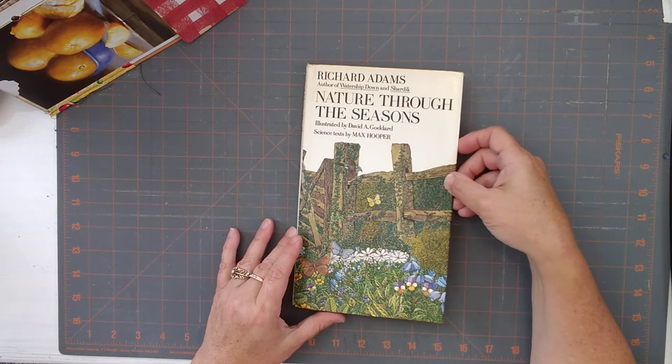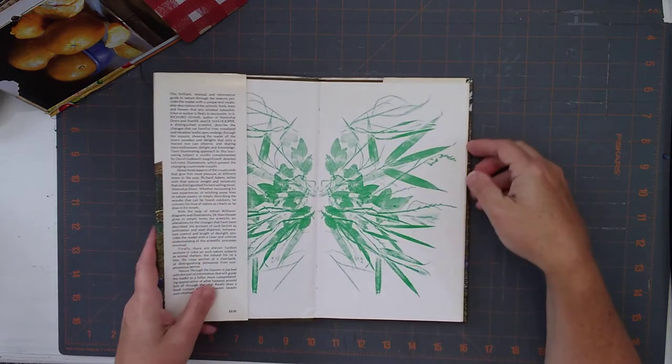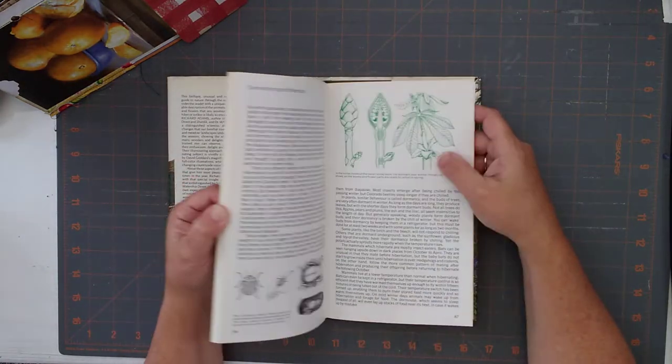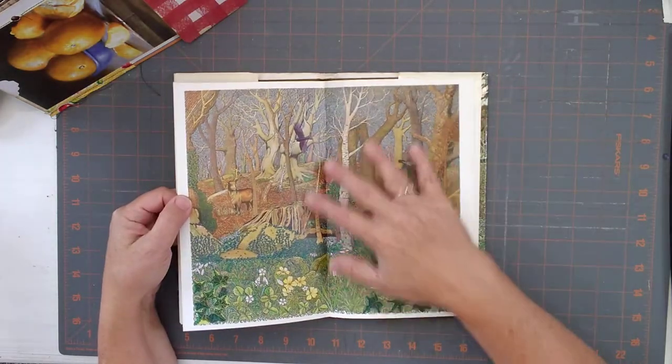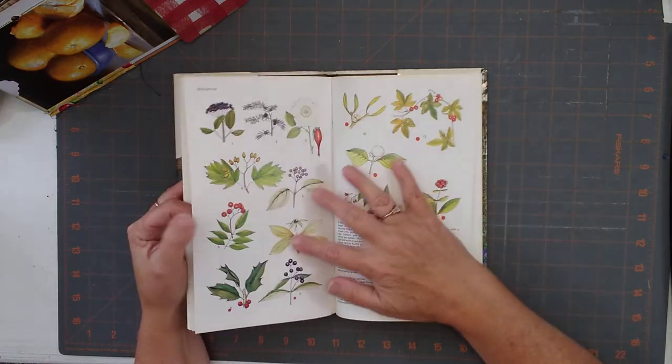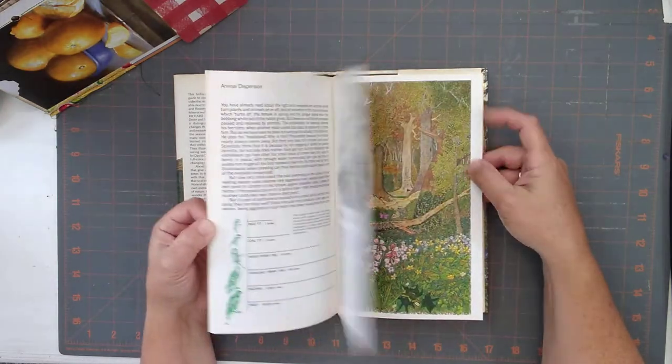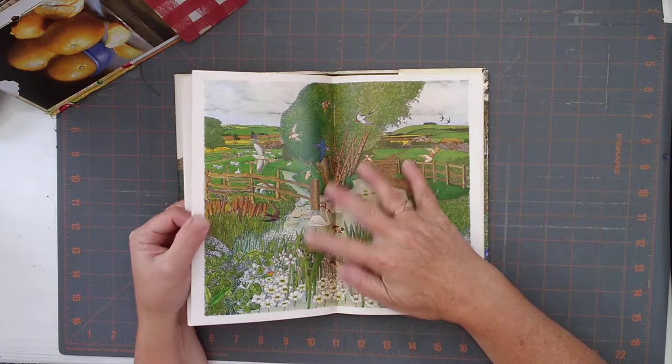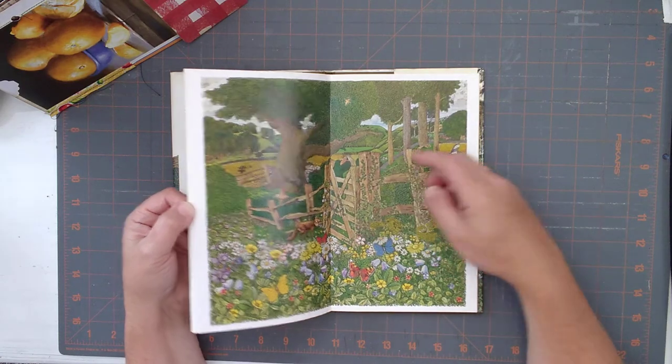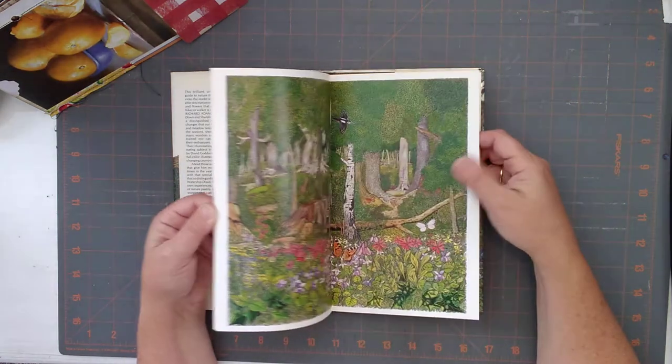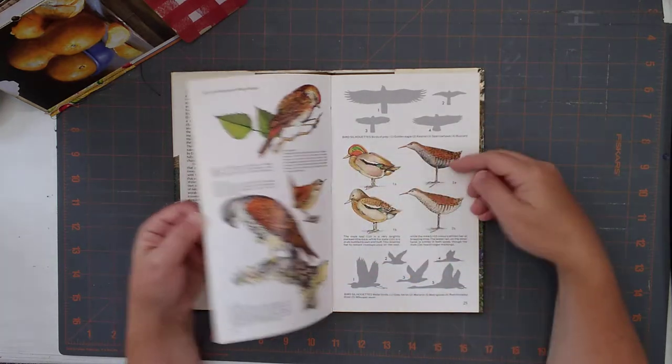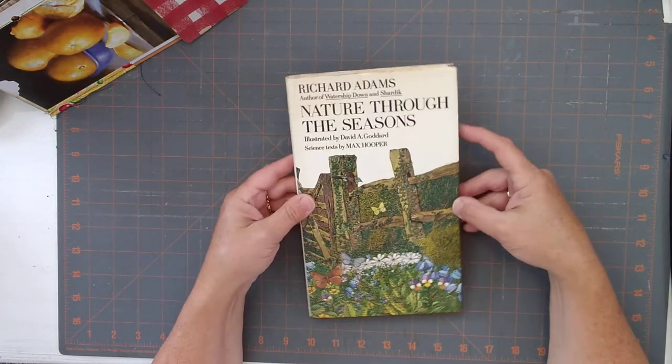Okay, and then I got Nature Through the Seasons. This I thumbed through and I really liked the pictures in here and a lot of the images. Look at that. Look at those. Those might be fussy cut out. I love these because these will make a great center page in the journal. And this has a string binding in it, so I'll easily be able to cut it and remove the pages. But I just love all these images in this book. So look at that. So this was a great book. Nature Through the Seasons.